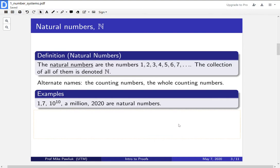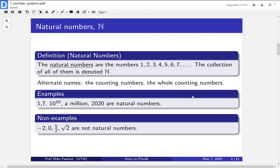So what makes something not a natural number? The things that aren't natural numbers are negatives. 0 doesn't count because we start at 1. 5 over 2 isn't. This is like 2.5. And the square root of 2 is also not a natural number. It's somewhere between 1 and 2.